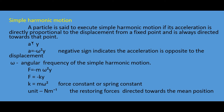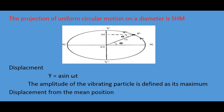The force F equals mass times acceleration, that is F equals ma. Since acceleration equals minus omega squared y, we can write F equals minus m omega squared y. Here k is the force constant or spring constant, and its value is k equals m omega squared. The unit of force constant is Newton meter minus one.